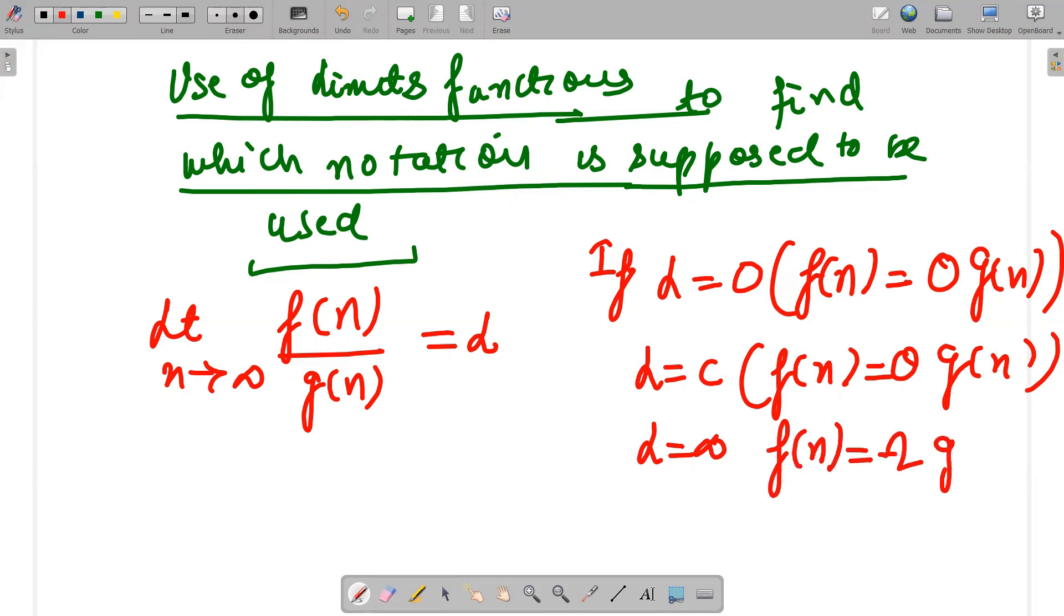is omega of g(n). Again, 0 means Big O, constant means Big Theta, and infinite says Big Omega.